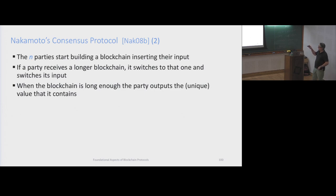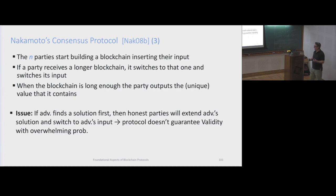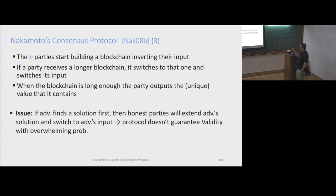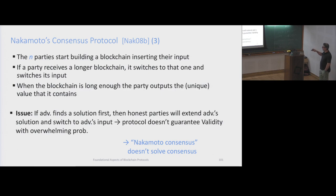When the blockchain is long enough, the party outputs the unique value it contains. But it's easy to see this doesn't work, because the adversary has a constant probability of being successful first. They're going to spread their value, everybody's going to switch to that value, and we give up on validity. The parties are going to extend the chain using the adversary's input, so they're giving up on their own input. In that sense, this suggestion doesn't solve consensus.